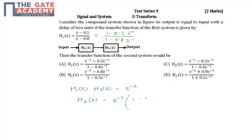We will have (1 - 0.8z^(-1)) divided by (1 - 0.5z^(-1)). That is nothing but if we solve this, we will finally get our option B.